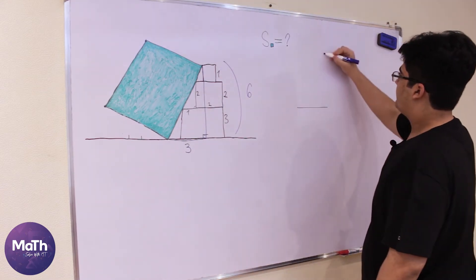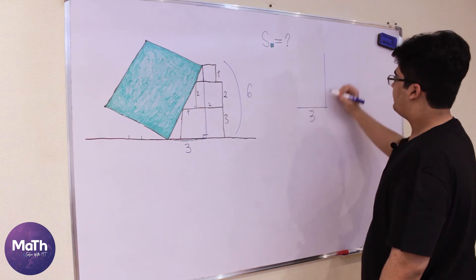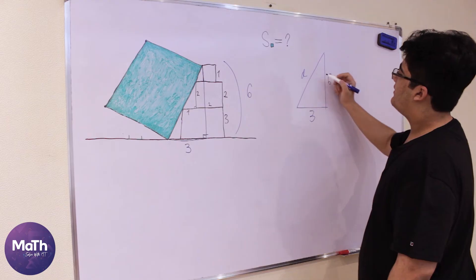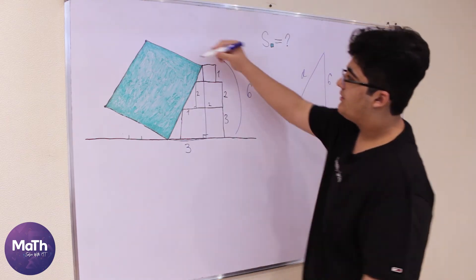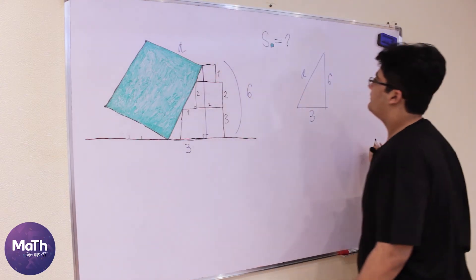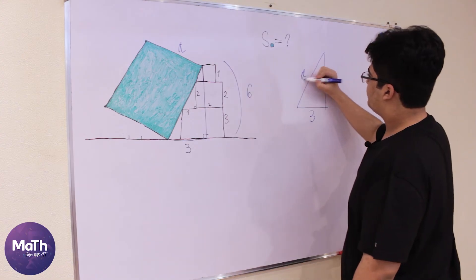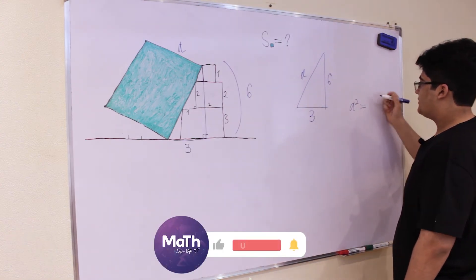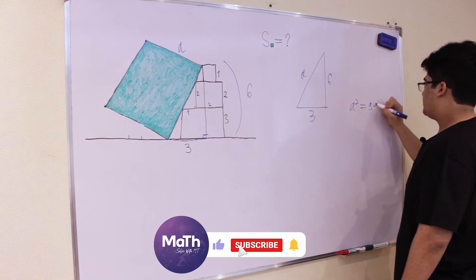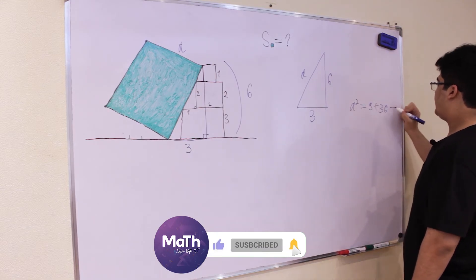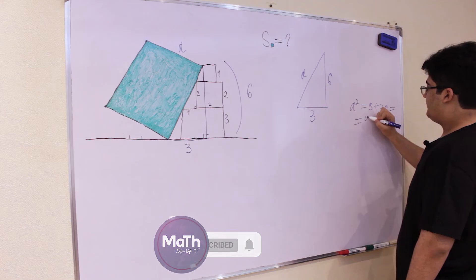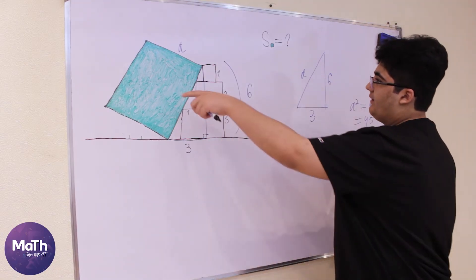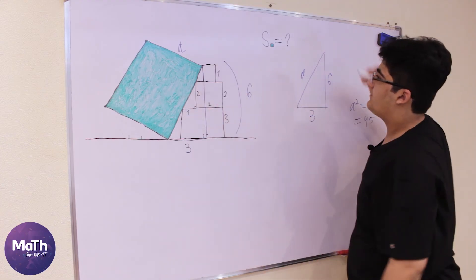So we have, let's say, a, where a is the side of the square. So here we have a² = 9 + 36, and that gives us 45.